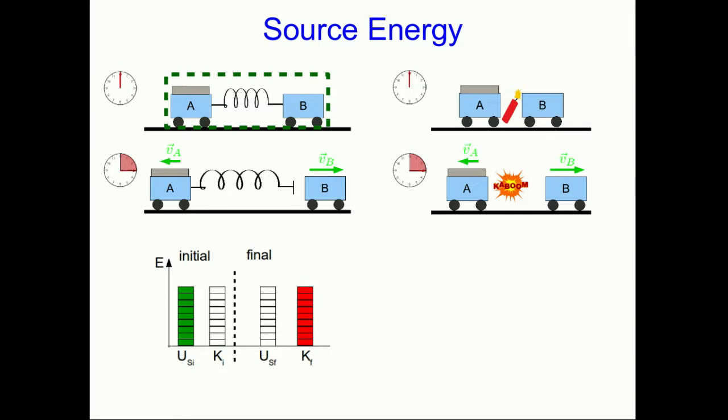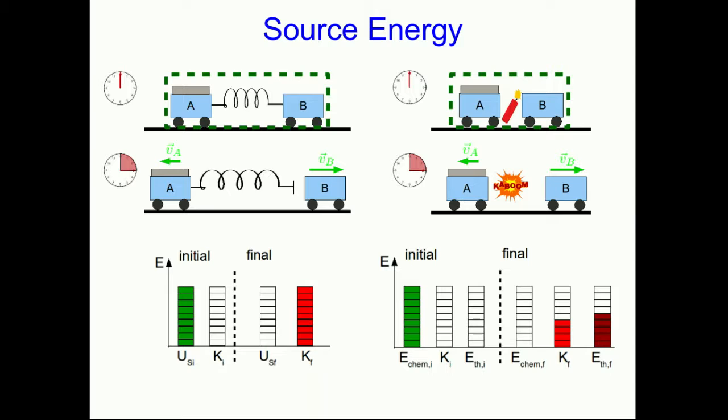Now let's think about on the surface a rather similar situation where instead of a spring, we're using an exploding firecracker to push the two carts apart. Now, if we include the firecracker and the two carts in our system so that once again, those are all internal interactions, we can define an internal energy in the system that we call the chemical energy, which is a kind of source energy. And notice that just as we can think of the spring potential energy as energy stored in the compression of the spring, we can think here about the chemical energy as energy stored in the unexploded chemicals in the firecracker. And again, that chemical energy gets converted into kinetic energy of the carts.